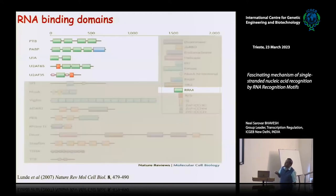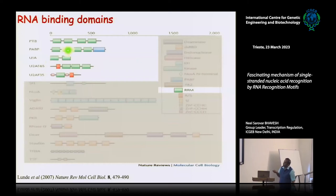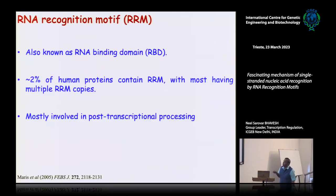We started working on one small, most predominant one, called the RRM domain — the RNA Recognition Motif. These are also modular. Some proteins have four, two, or only one. This motif is one of the most abundant ones, also known as the RNA binding domain. About 2% of the human proteome contains this RNA domain, and most which have been characterized are involved in post-translational processes.